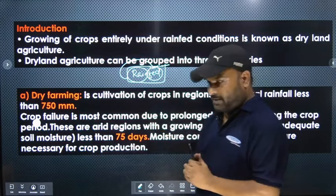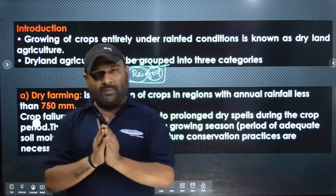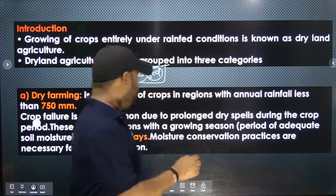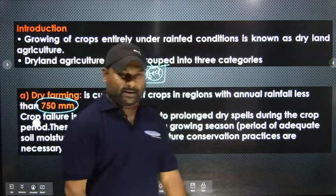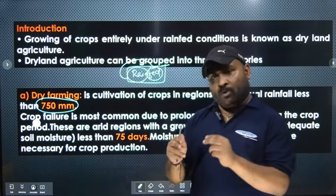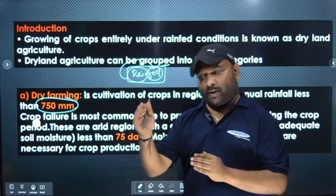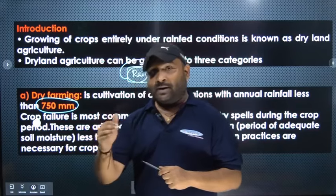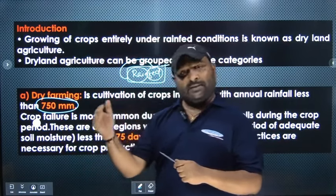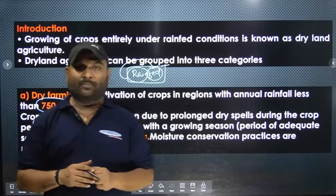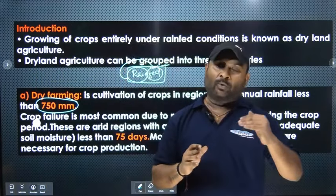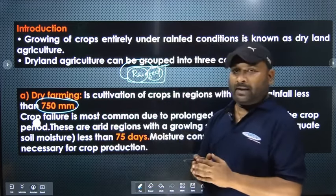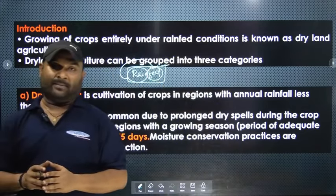If we talk about dry farming, it is generally practiced in the arid zone where annual rainfall is not more than 750 mm. In this area, moisture is very low and the growing season is less than 75 days with adequate moisture. There is crop failure due to dry spells and drought conditions, so we have to use soil moisture conservation techniques.